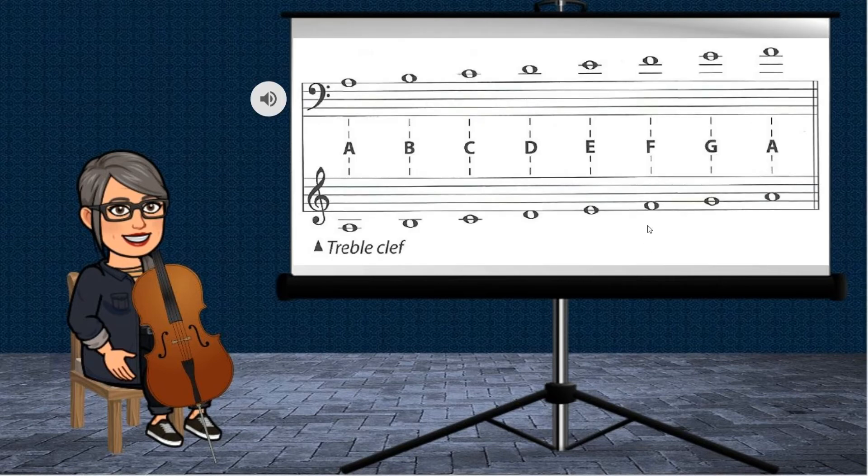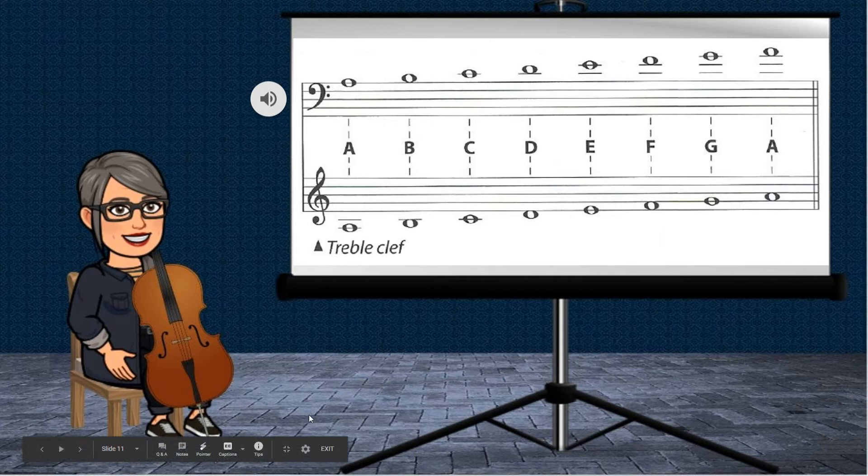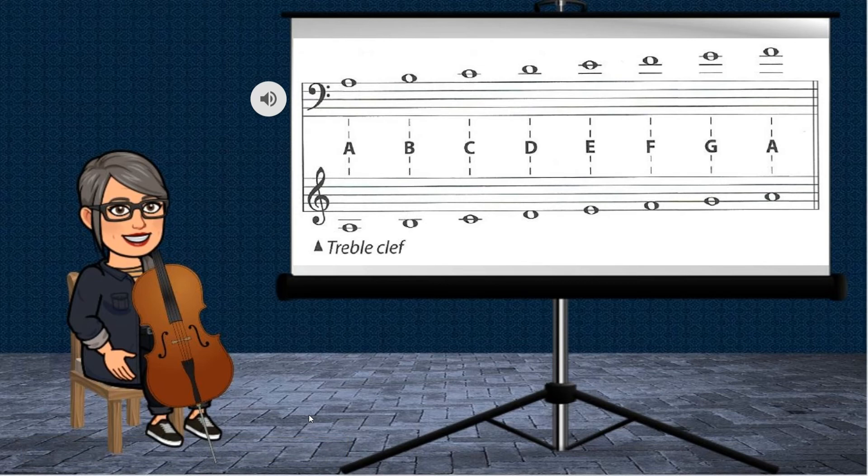Alright, here is the A natural minor scale once again, and this time it is written in treble clef. So this right here is your open A, and then you would travel up onto the A string to the last harmonic A right here. Let me go ahead and play the example for you and follow along in treble clef. Now remember, you can come back and review this as many times as you need to feel comfortable reading in treble clef.